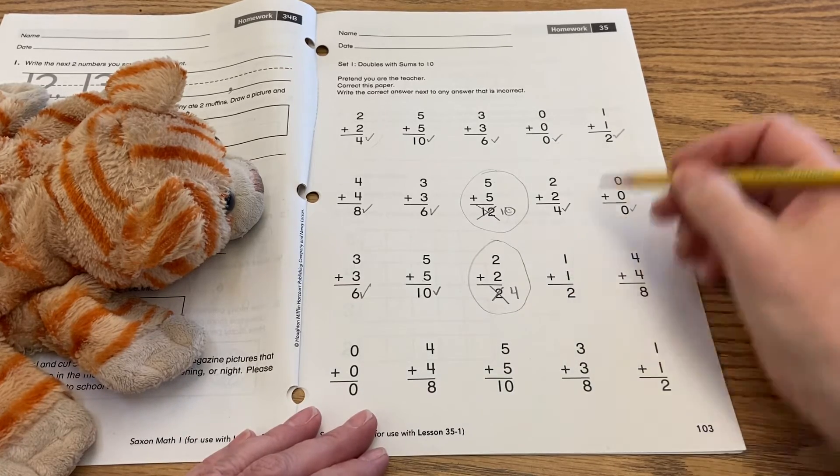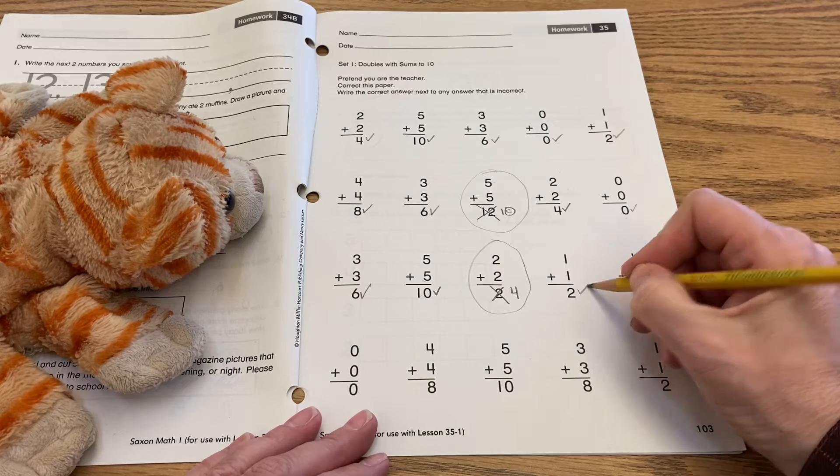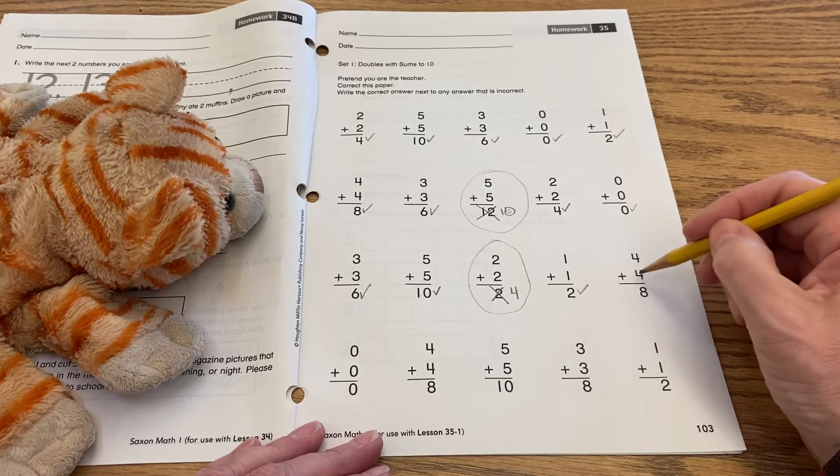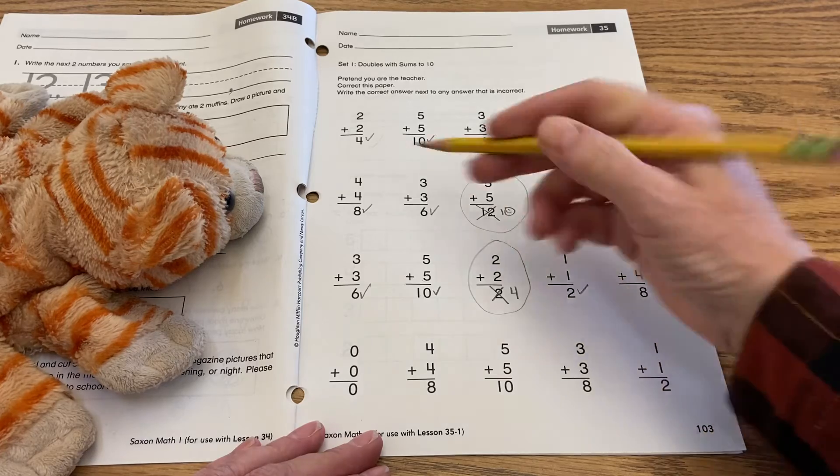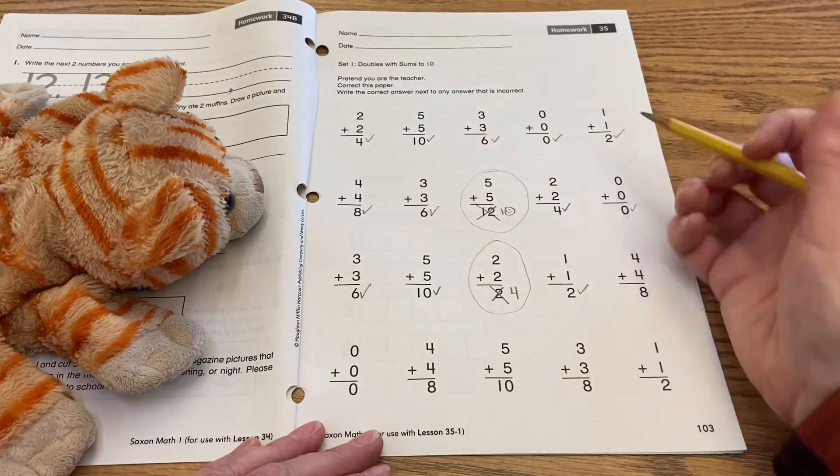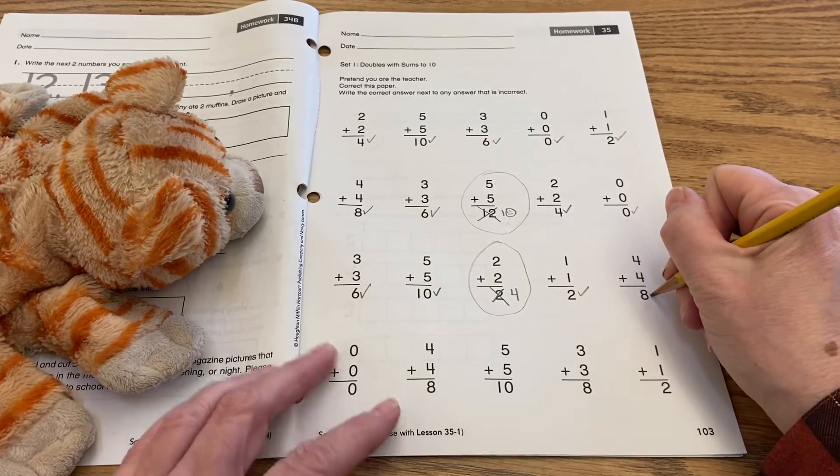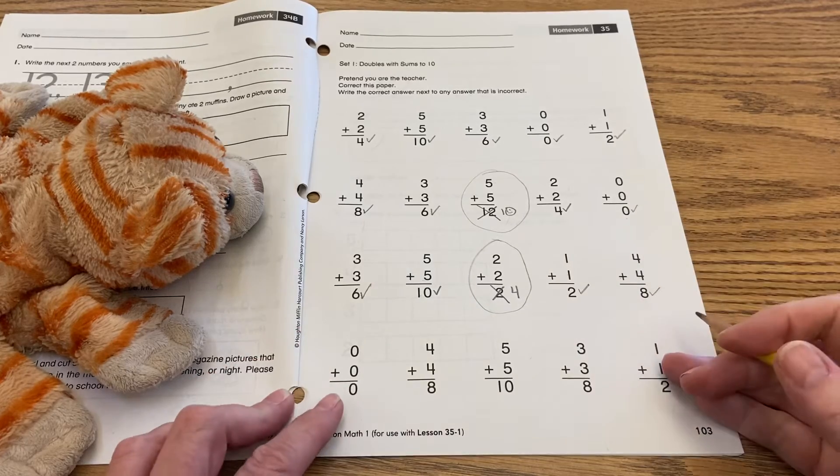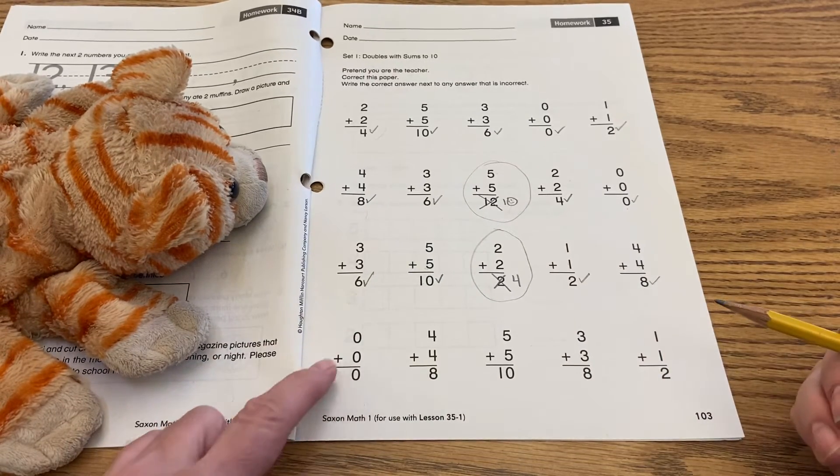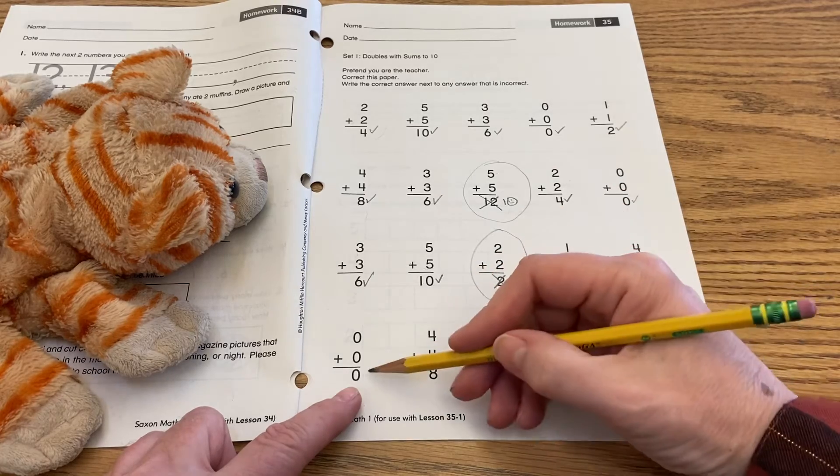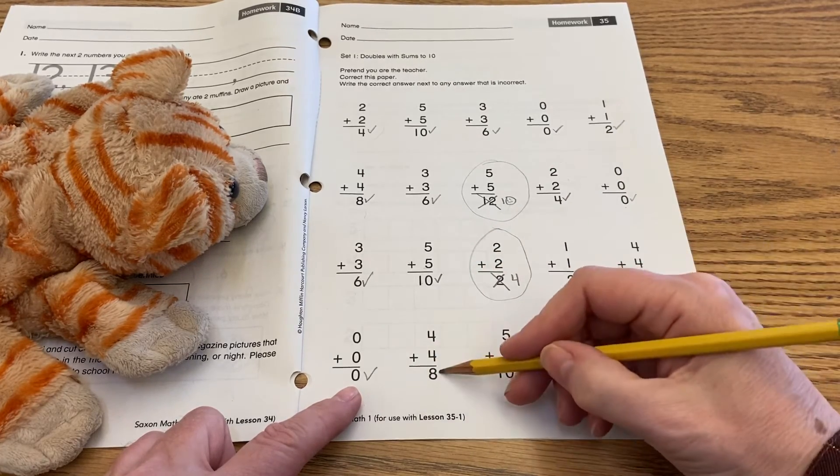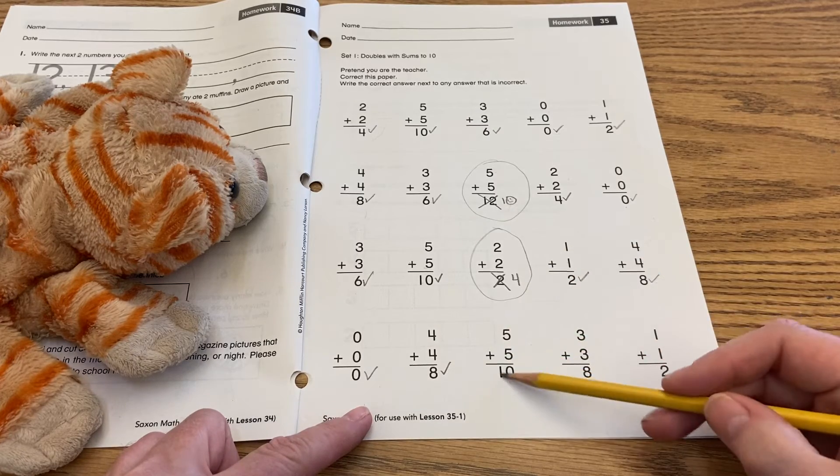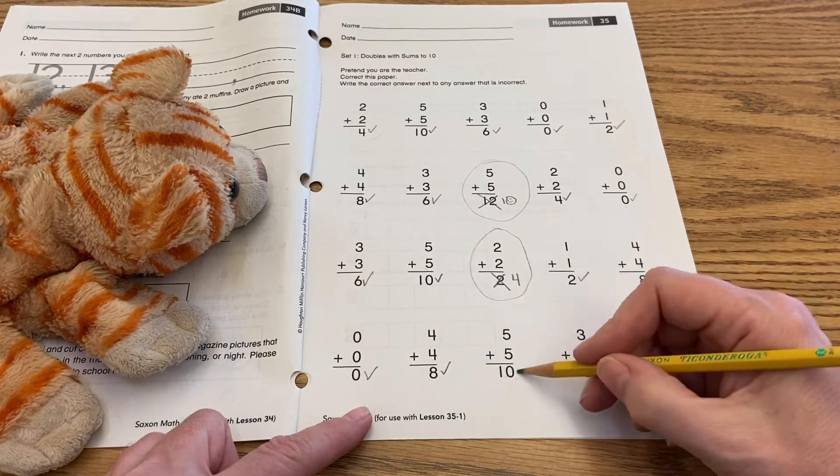All right. One plus one equals two. We proved that up here, so we can check that off. Four plus four equals eight. Do we have that before? Yes, we had it right over here. We already proved that that's correct using our fingers, so we can put a check by it. Down at the bottom, zero plus zero equals zero. Yes, we know that's true. Four plus four equals eight. Yes, we know that's true. Five plus five equals ten. Yes, we know that's true.